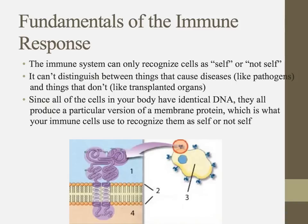Your immune system can only recognize other cells as being self or not self — do they belong there or are they from an outside source? It can't distinguish between things that cause diseases and things that don't. It doesn't know if whatever this non-self thing is harmful or not. It just knows that it doesn't belong there.